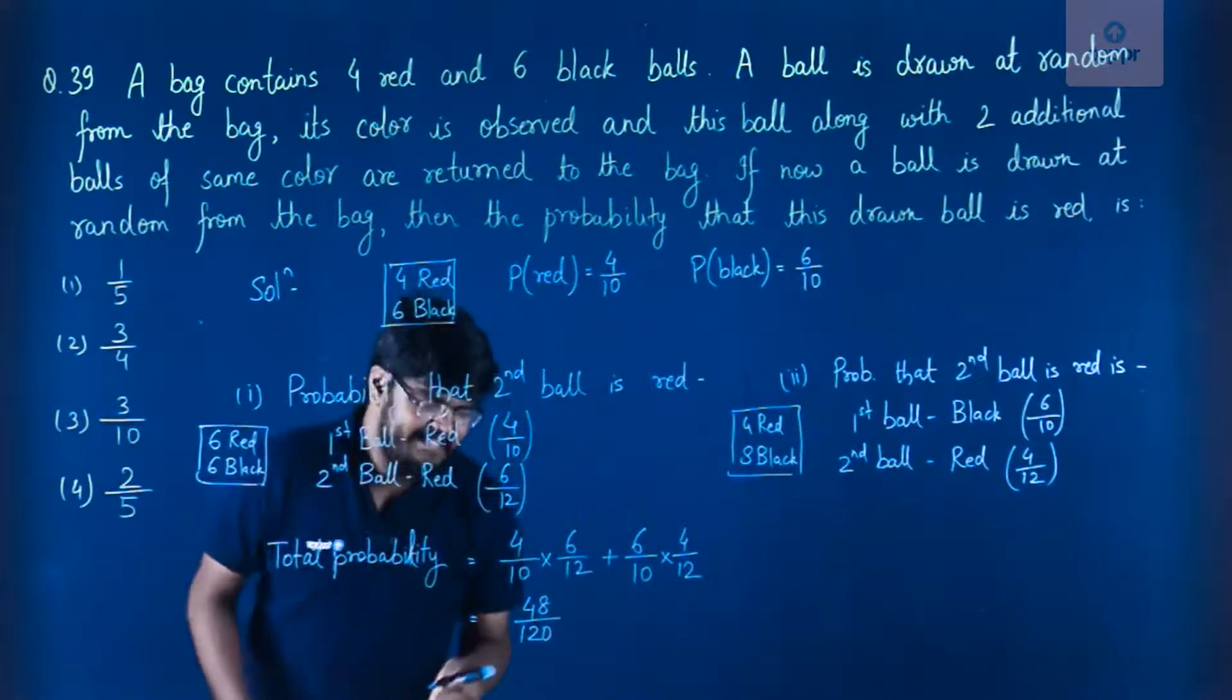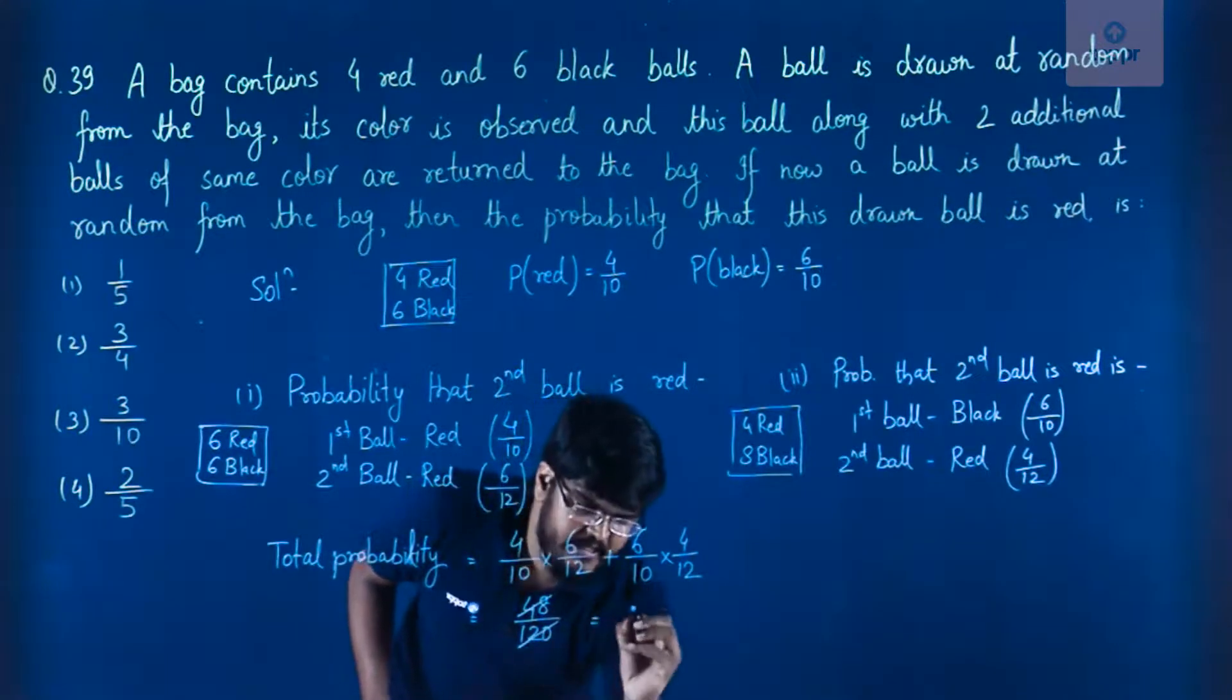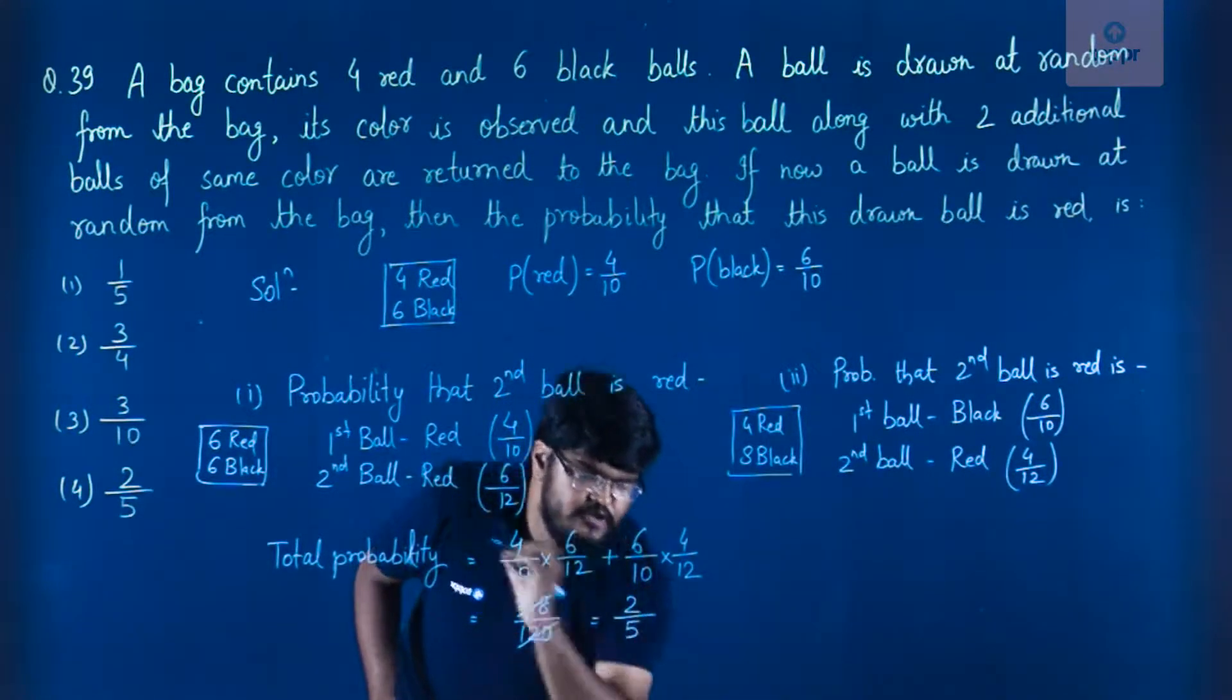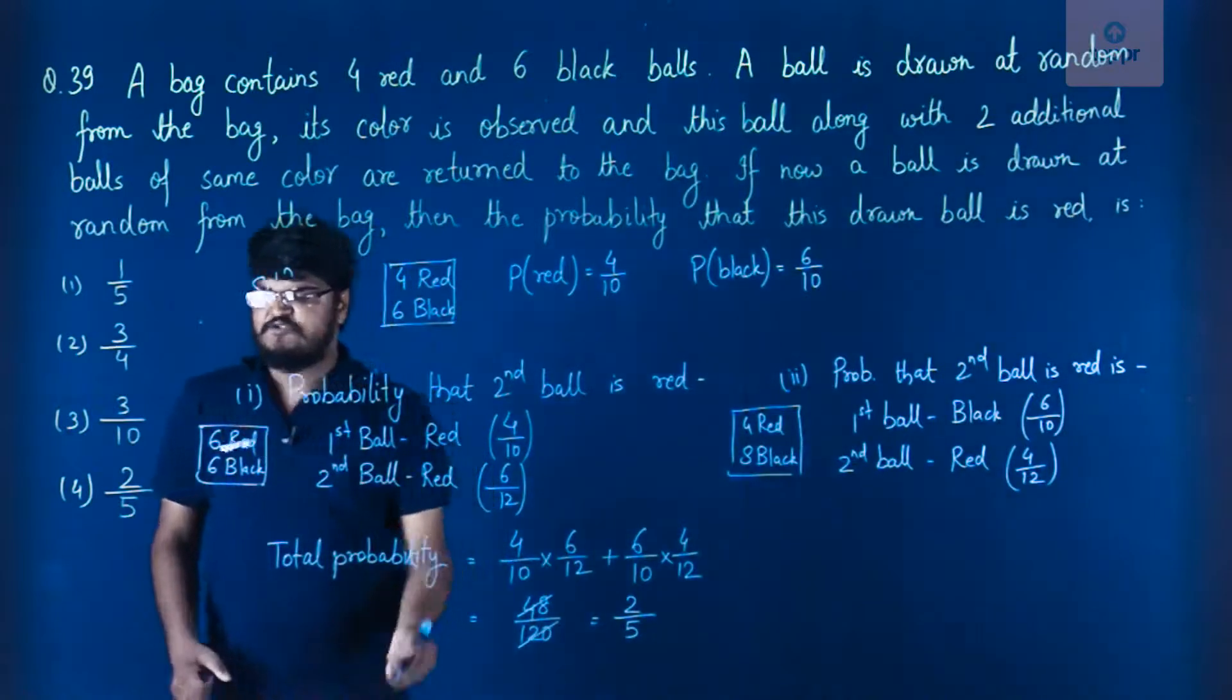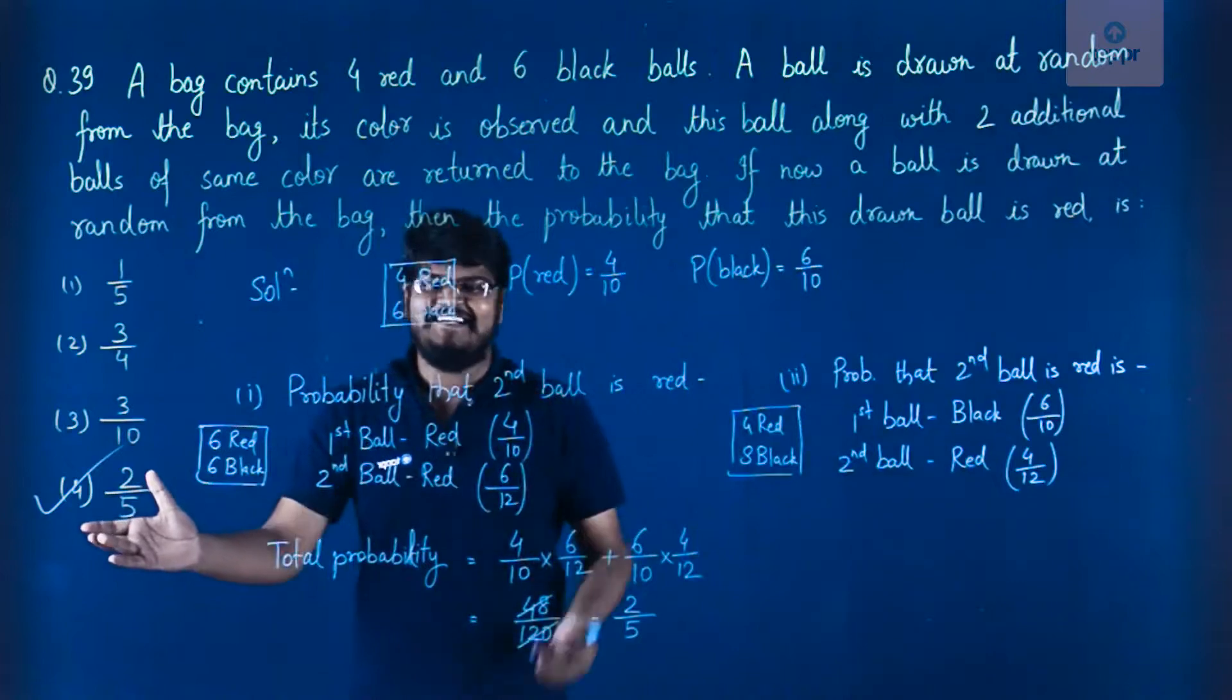48 by 120 from the table of 12, or in fact 24 if you take it out, gives you the answer as 2 by 5. So our final answer is 2 by 5, which is option 4. If your answer is option 4, you get full marks. All the best. Bye-bye.